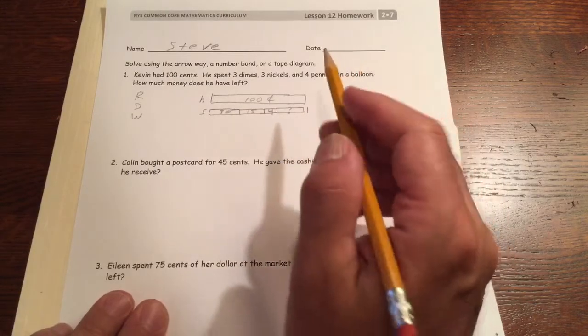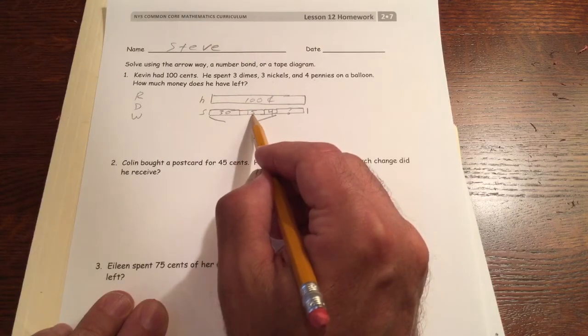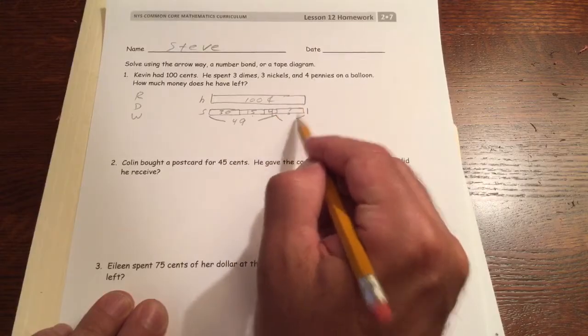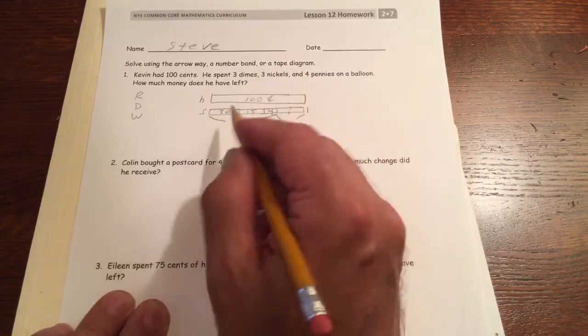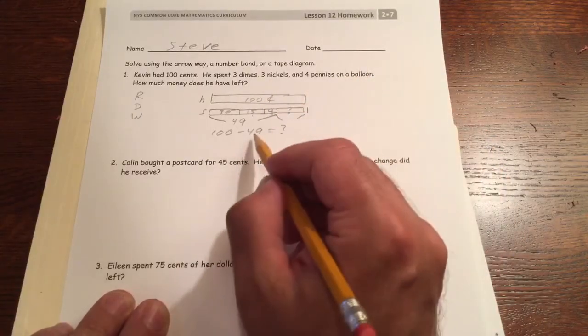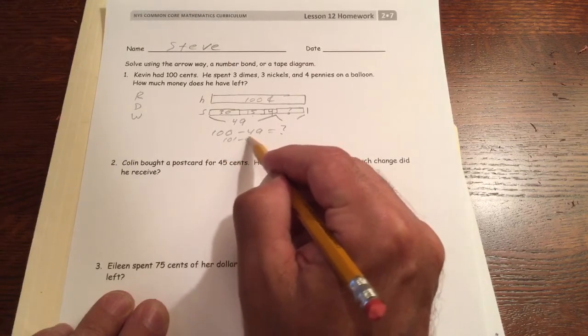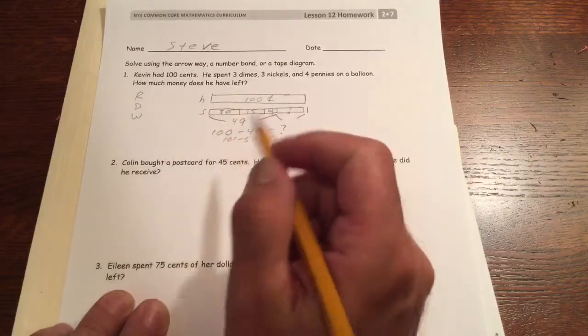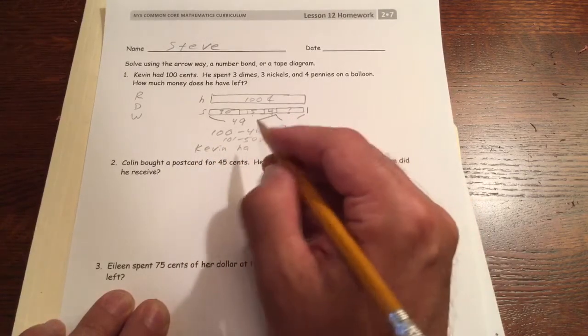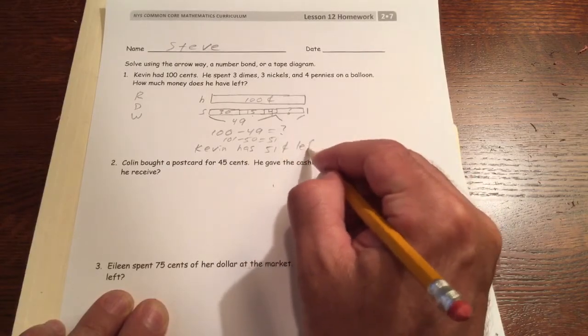L for what he had left. So whatever this is, 30 and 15 is 45, and four more is 49. So 49 plus that is 100. 100 minus 49 equals how much he's left. If I thought of this as 101 minus 50, I'd have 51 left. That's easier to solve mentally. So Kevin has 51 cents left.